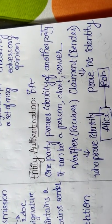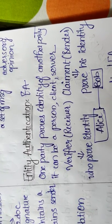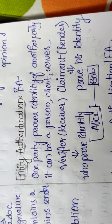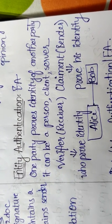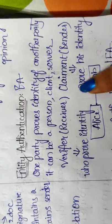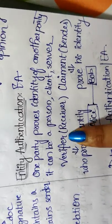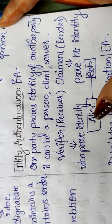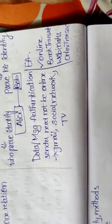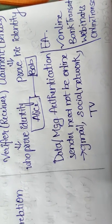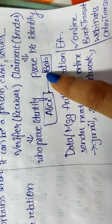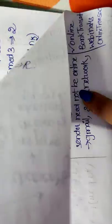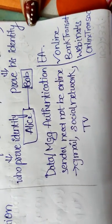Next, entity authentication. One party should provide identity to another party. That is called entity authentication. It can be a person, client, or server. The receiver is called the verifier and sender is called the claimant. Who proves his identity is the sender. Who should prove others' identity is the verifier, the receiver. Alice is called claimant and Bob is verifier because Alice is sending the message to Bob. What is the difference between data authentication and entity authentication? Until entity authentication is completed, Alice and Bob should be online. There is no need for the sender to be online when it is data authentication.